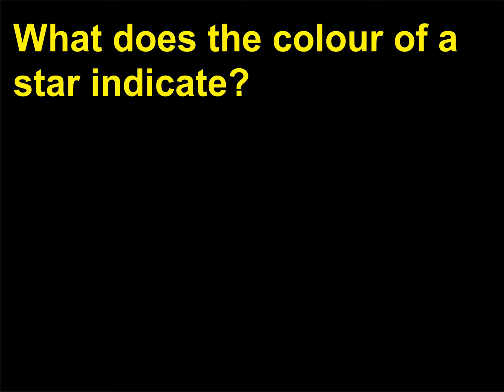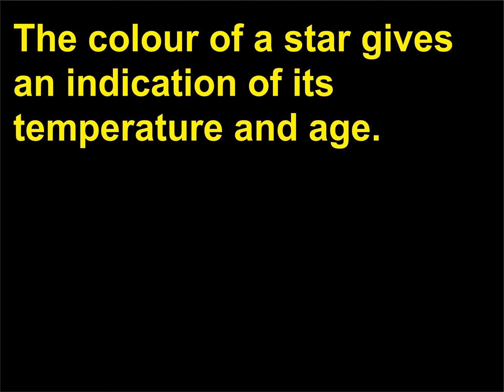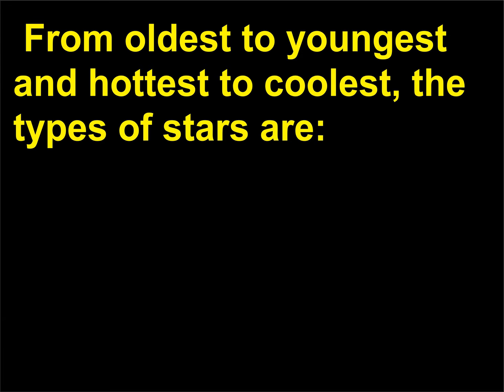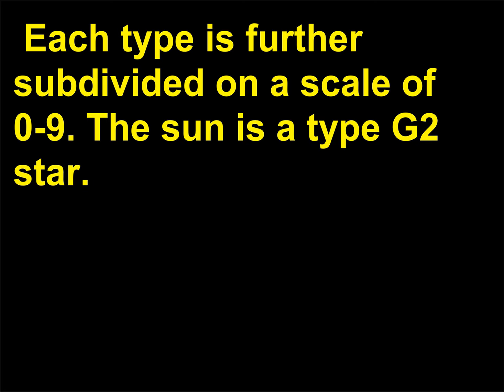What does the color of a star indicate? The color of a star gives an indication of its temperature and age. Stars are classified by their spectral type, from oldest to youngest and hottest to coolest. Each type is further subdivided on a scale of 0 to 9. The sun is a type G2 star.